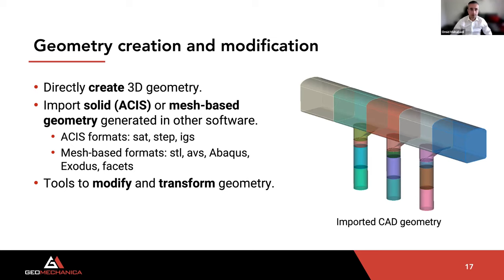In terms of geometry creation and modification, you can directly create 2D and 3D geometries for standard shapes, or import solid or mesh-based geometries from third-party CAD software. You can import from ACES formats such as SAT, STEP, or IGS, as well as mesh-based formats such as STL. The software has tools to modify and transform your geometry, including moving, translating, scaling, rotating, combining surfaces, splitting, merging, imprinting, and Boolean operations.